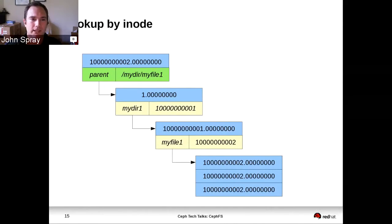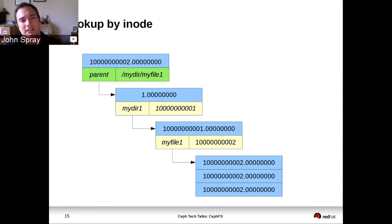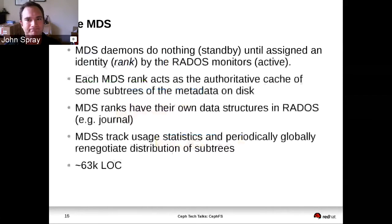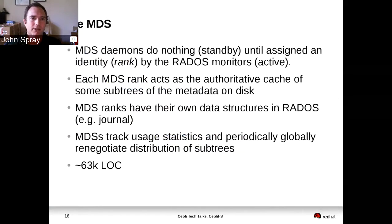When you do a lookup by inode, you initially go read the backtrace from the data object, and then the rest of the lookup is just the same by-path process going through directory fragments — except instead of having been given the path by the client, we got the path by looking up the backtrace.